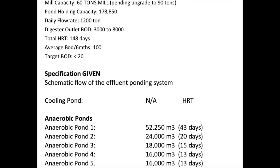In summary, this is a 60-tonne mill with a pond holding capacity of 178,850, a daily flow rate of 1,200 tonnes, total HRT of 148 days, average BOD of 100, and a targeted BOD of 20. From the technical study, an audit report and a customised treatment plan have been sent to the mill.